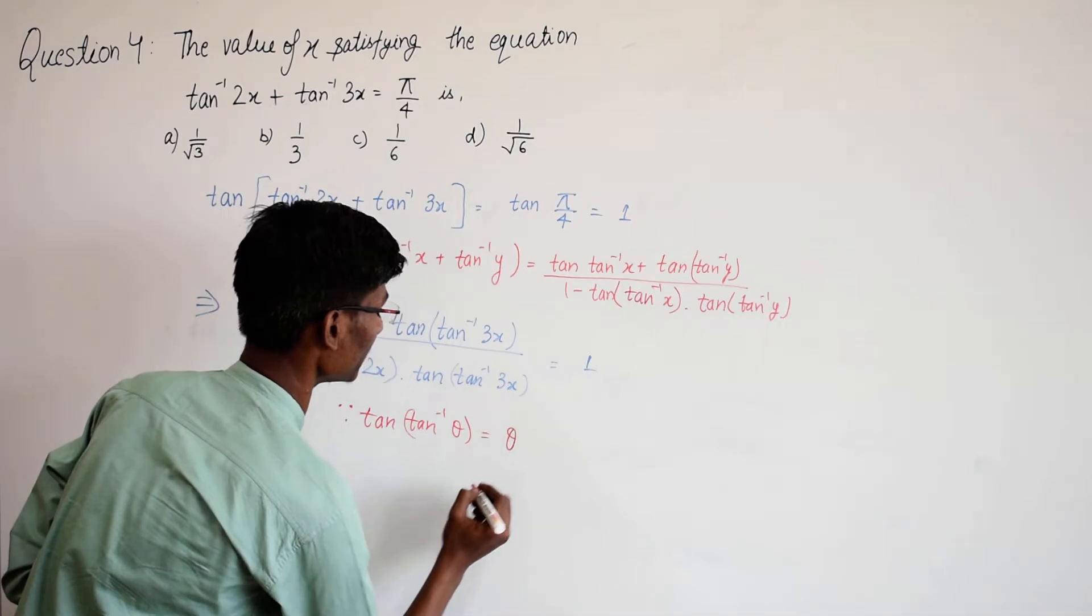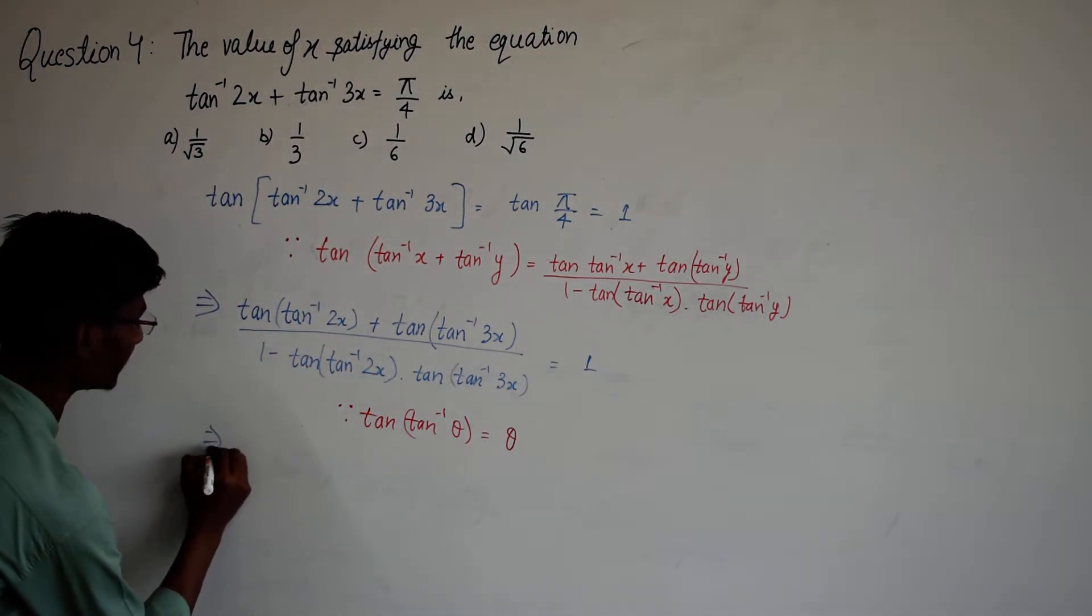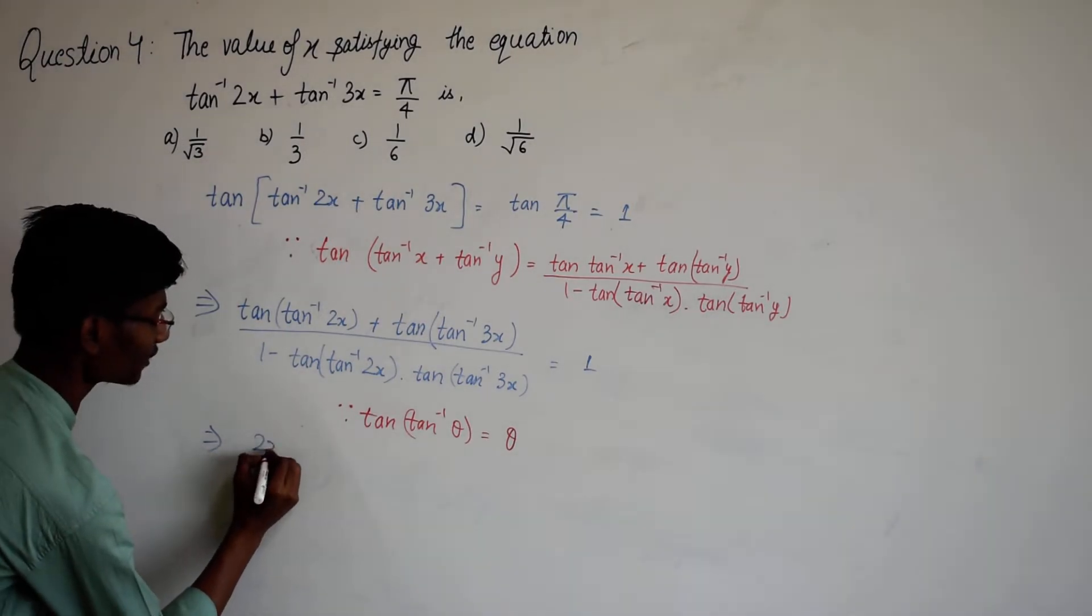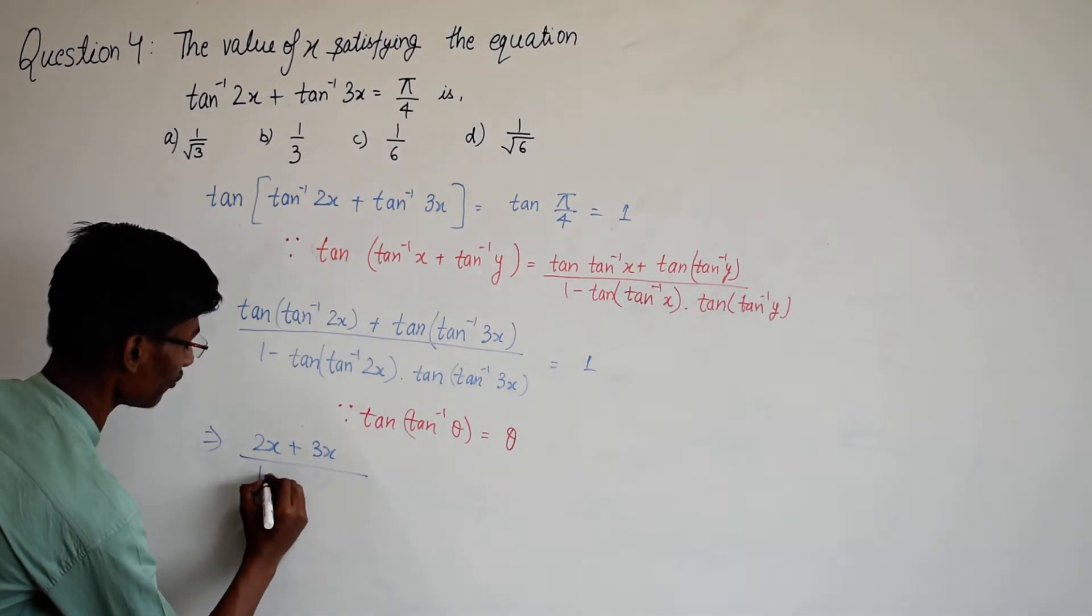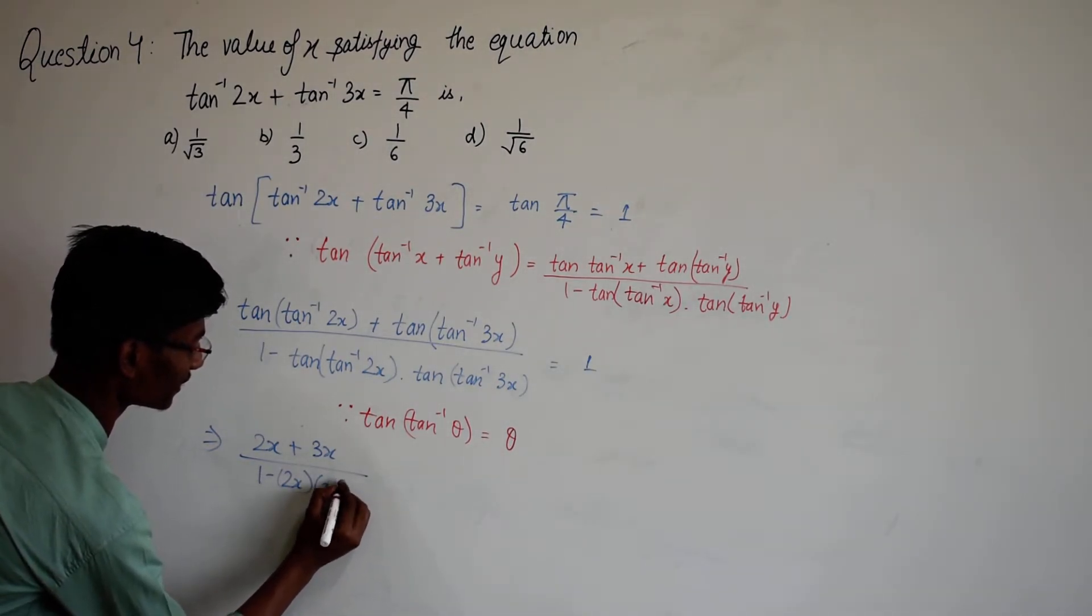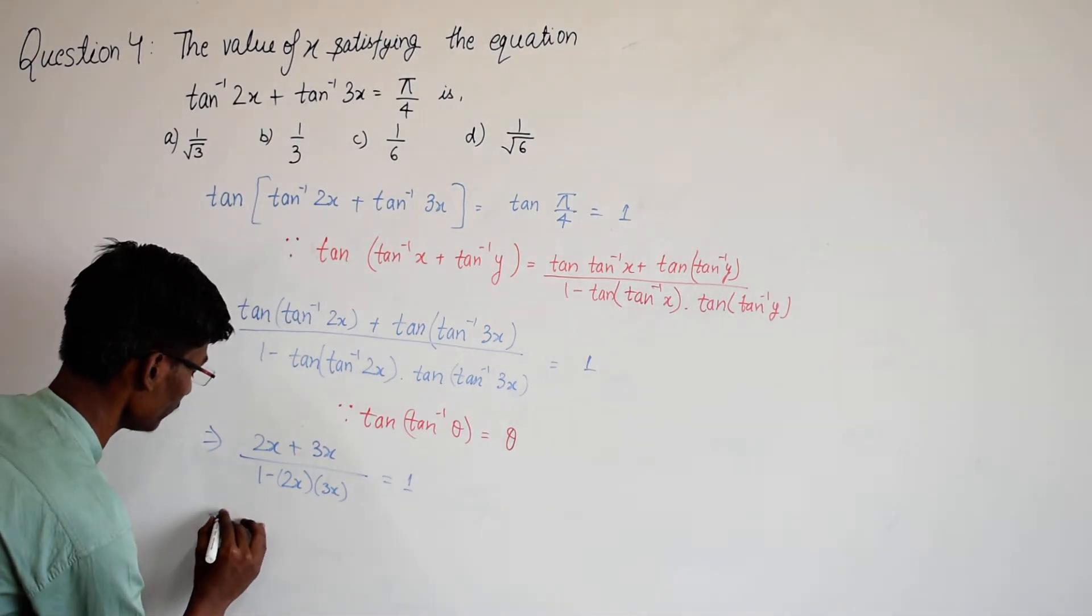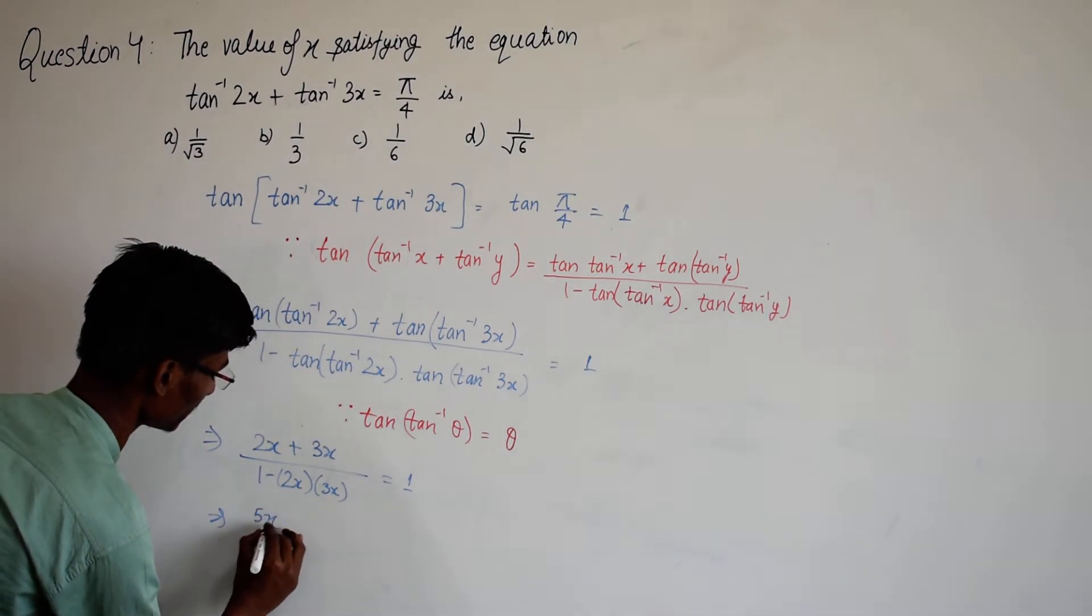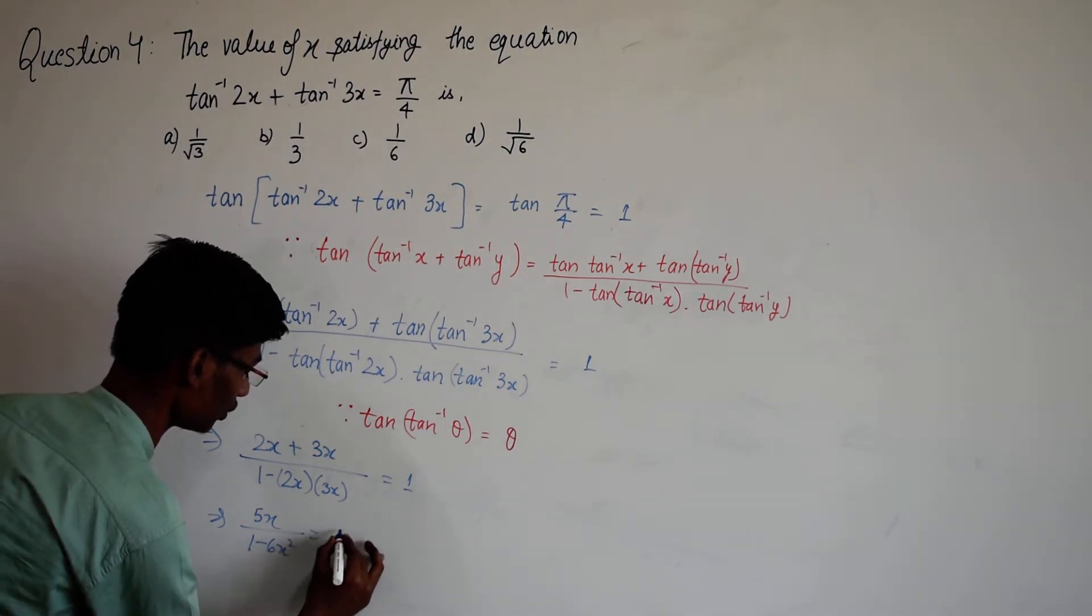So here we can write it as 2x plus 3x divided by 1 minus 2x times 3x, and on the right hand side it is equal to 1. So it will be equal to 5x divided by 1 minus 6x square equal to 1.